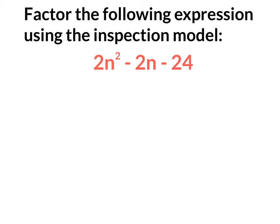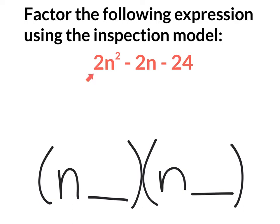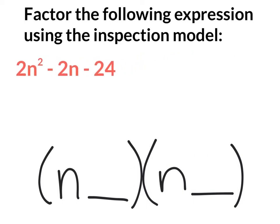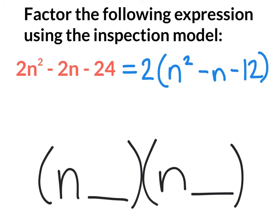The second example asks us to factor using the inspection model for the equation 2n squared minus 2n minus 24. Notice that there's a coefficient in front of the n squared term. What we're going to do first is take that coefficient out of all three terms as the greatest common factor. That will equal 2 times n squared minus n minus 12.